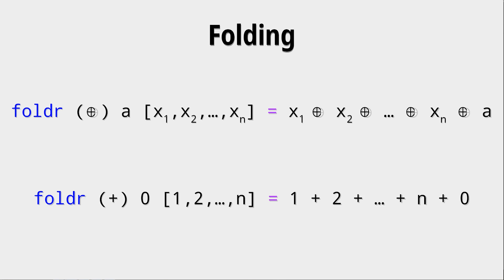Creating the sum of all elements of a list can be done with plus and the starting value zero, because then we compute the sum one plus two plus, well, whatever, plus n plus zero.